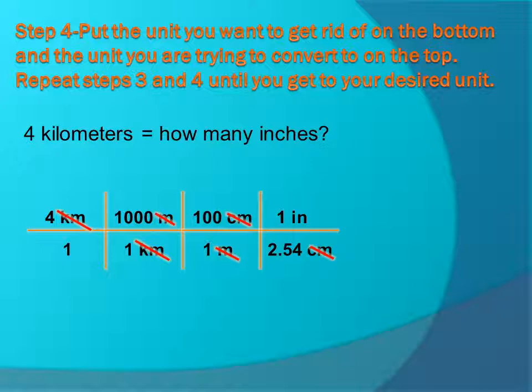So 4 times 1,000 times 100 divided by 2.54. And remember, if we're talking order of operations, it doesn't matter the order that you do multiplication and division. They can go in any order. So you could do 4 divided by 2.54 times 1,000 times 100. It doesn't matter. So any order you want to do it, just make sure you know that the top, anything on the top gets multiplied, and anything on the bottom gets divided.